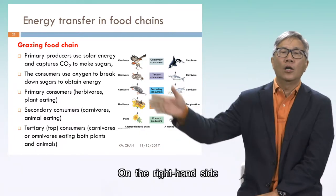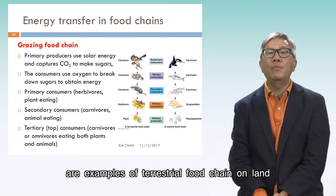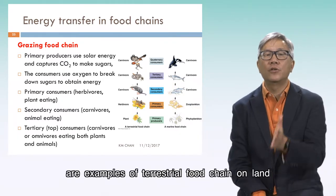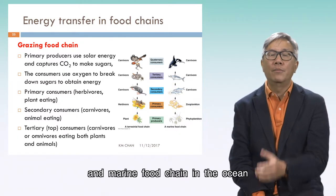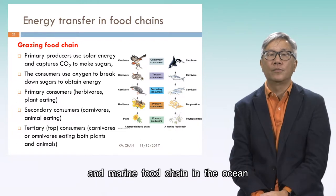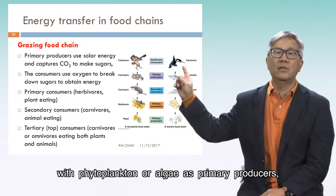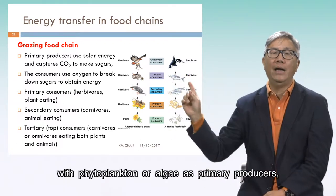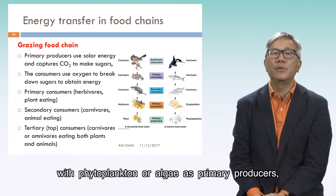On the right-hand side are examples of a terrestrial food chain on land and a marine food chain in the ocean, with phytoplankton or algae as primary producers.